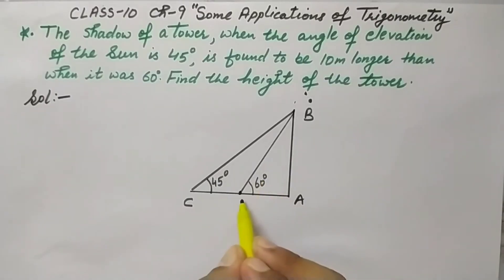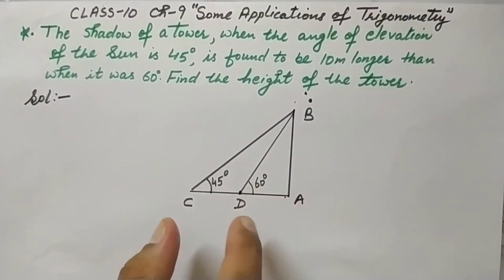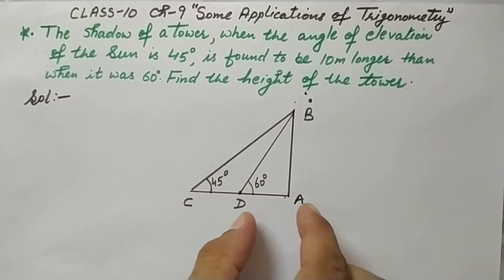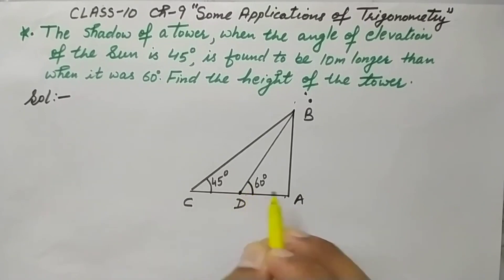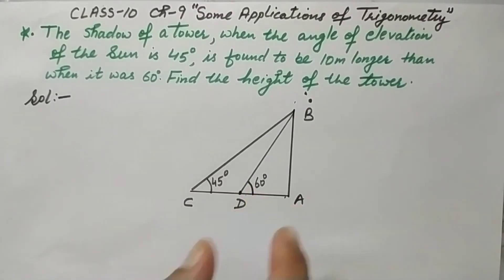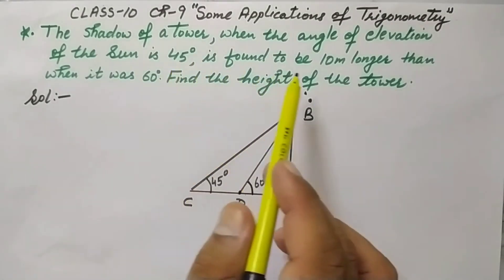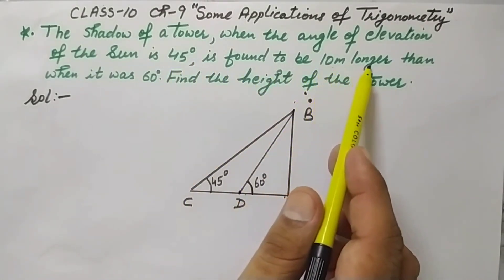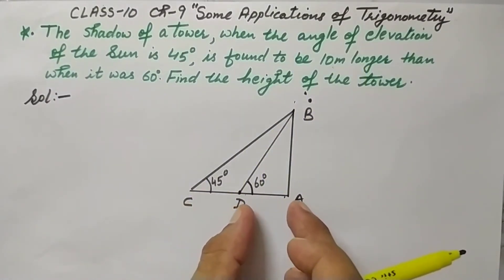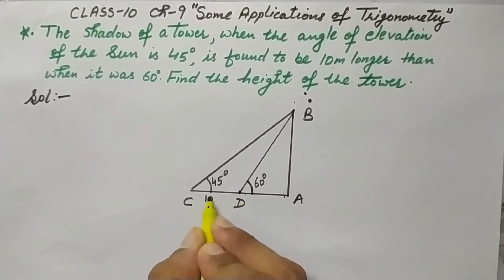The shadow at this time is AD. When the angle of elevation is 45 degrees, shadow is AC, and when the angle of elevation is 60 degrees, shadow is AD. It is said that at 45 degrees, the shadow is 10 meters longer. So this shadow AC is 10 meters longer than shadow AD. That means CD distance is 10 meters.